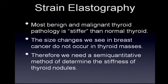Most benign and malignant thyroid pathology is stiffer than normal thyroid. In strain elastography, because this is a qualitative method, they both show up as black on a black and white scale, or as the hard color on a color scale. So just looking at the color is often difficult to determine if something is benign or malignant, as both benign and malignant lesions are stiffer than normal thyroid. The size changes we see in breast cancer do not occur in thyroid masses, so we need a semi-quantitative method of determining the stiffness of thyroid nodules.